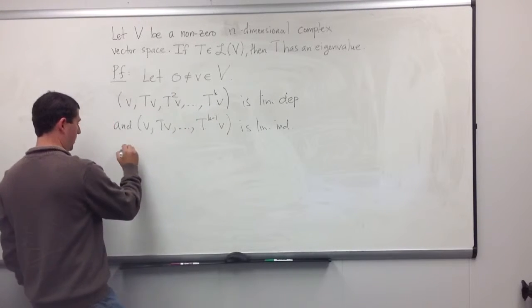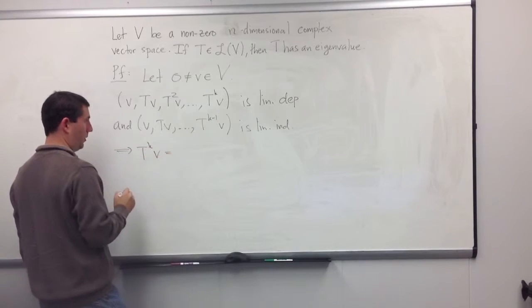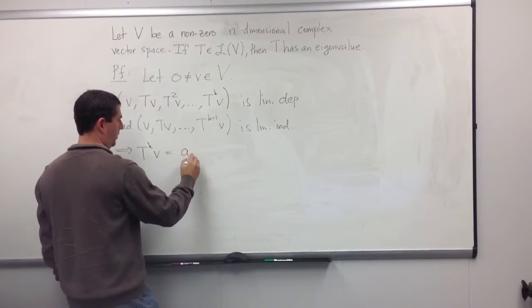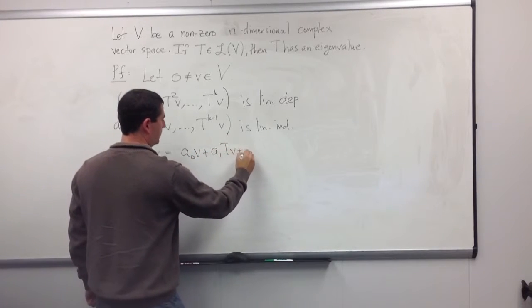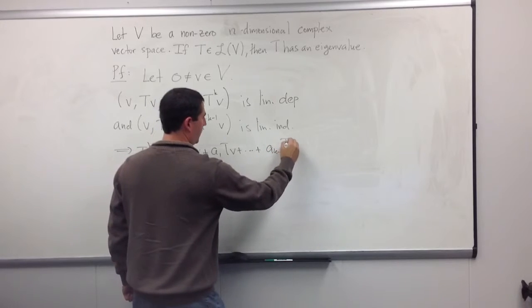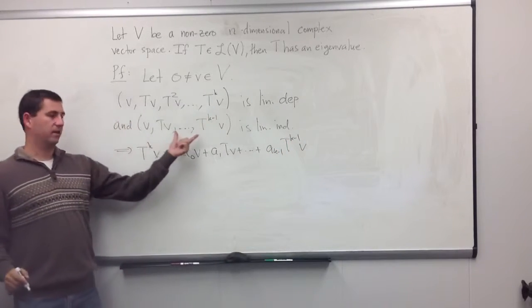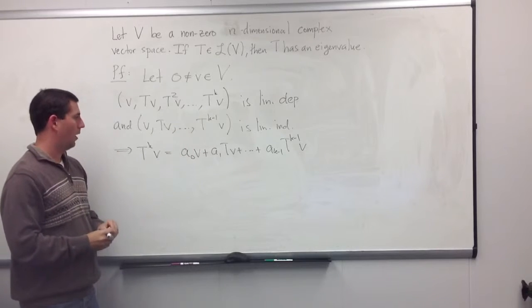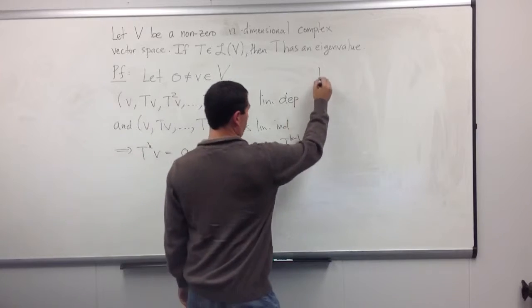So I would know that T^k v could be written as some linear combination of this list below. Well, I want to use this to produce a polynomial. So let's write a polynomial over here.